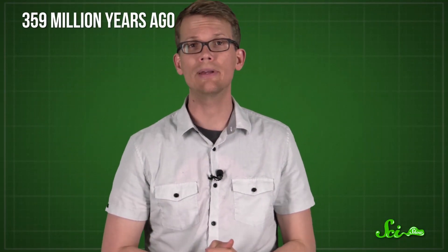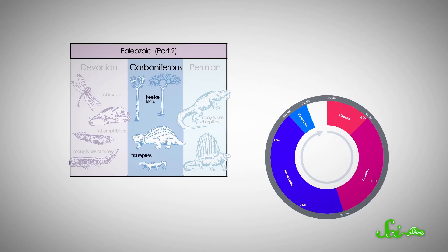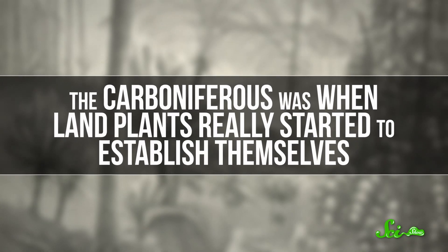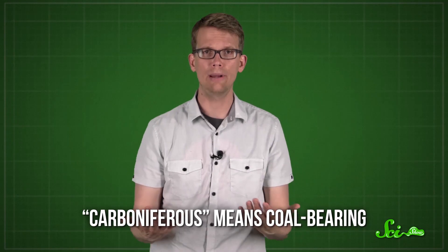Then 359 million years ago, the fifth period of the Paleozoic began, the Carboniferous period. You might have heard that fossil fuels are made of dinosaurs, but they are actually much, much older than that. The Carboniferous was when land plants really started to establish themselves. The climate was mild enough for plants to grow year-round, and huge forests grew. The word Carboniferous means coal-bearing, and for good reason. Hundreds of millions of years later, we're digging up the remains of those forests as coal.